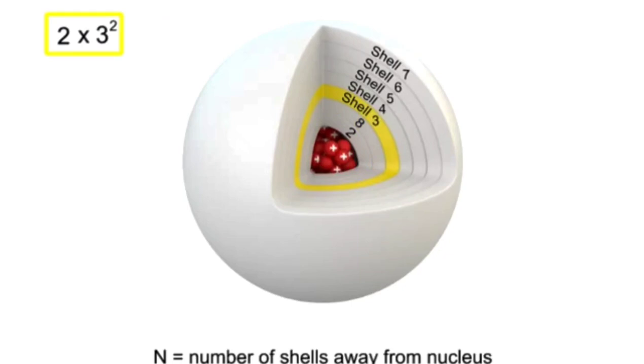For the third, 2 times 3 squared, or 2 times 9, equals 18 electrons.